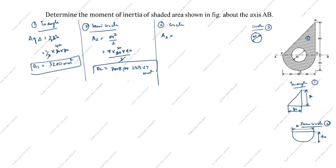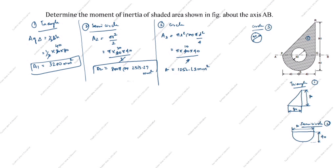The area of the circle is A3 = πd²/4. The diameter is 40, so we compute: π × 40 × 40 / 4 = 1256.63 mm². This is A3.